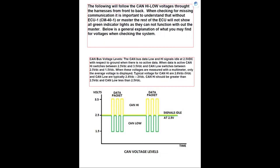The graph at the bottom of this page is a general explanation of what you may find for voltages when checking the system. CAN bus voltage levels: the CAN bus data low and high signals idle at 2.5V with respect to ground when there is no active data. When data is active, CAN high switches between 2.5 and 3.5, and CAN low switches between 2.5 and 1.5. When measured with a multimeter, only the average voltage is displayed. Typical voltage for CAN high is 2.6 to 3V, and CAN low is typically 2.4 to 2V. CAN high should be greater than 2.5V and CAN low less than 2.5V.